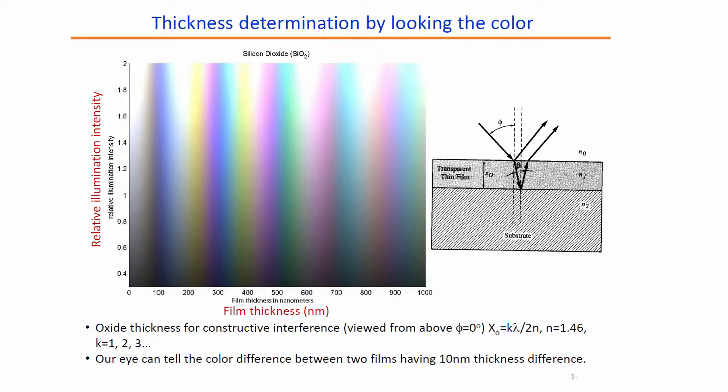The second technique is with the help of constructive interference. We can view it from above — if you see the wafer that I am holding in my hand, you will see that the color of the wafer is different. Depending on the color of the wafer you can say what is the thickness of silicon dioxide. Our eye can tell the color difference between two films having approximately 10 nanometer difference, but that is true only when you are an experienced user. Approximation does not work in a real-life domain — you need to be accurate when you design or fabricate a sensor, because the performance of a sensor will depend on the accuracy of the insulating material.